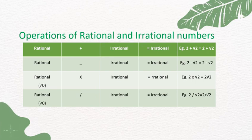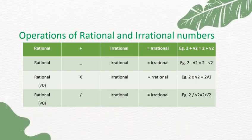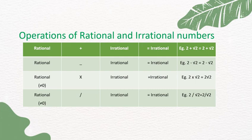A rational number divided by an irrational number (except 0) gives an irrational number. For example, 2 ÷ √2 = √2, which is an irrational number.